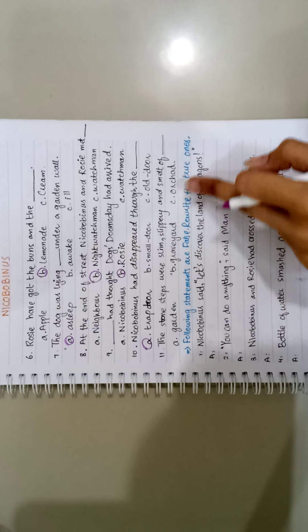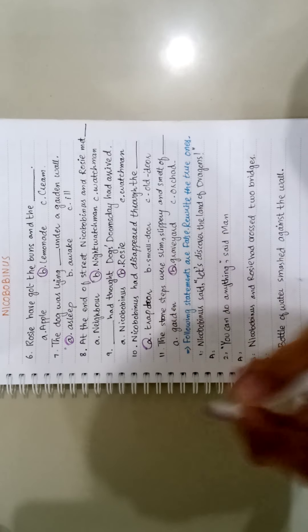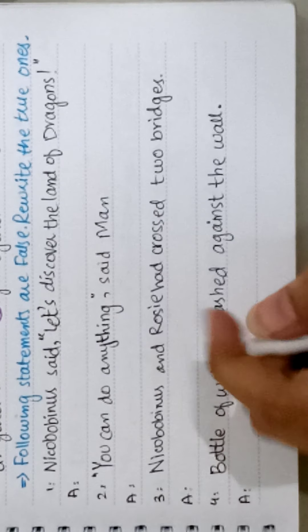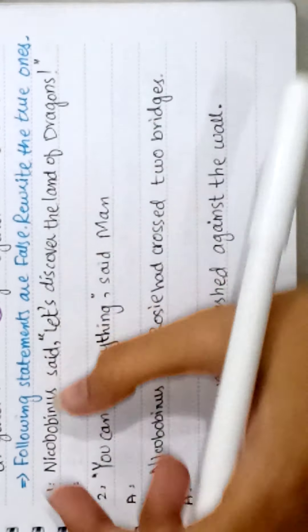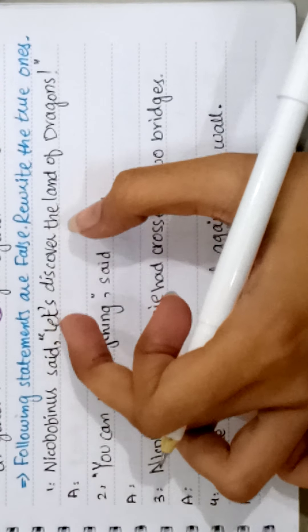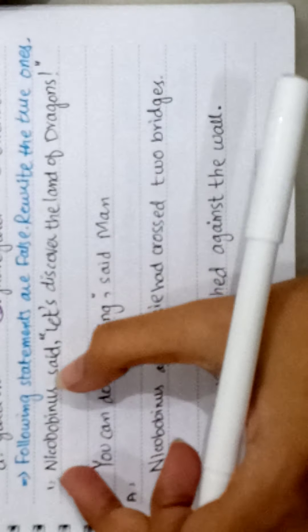Next, dash had thought dogs, doom days has arrived: Nicobobinus, Rosie, watchman. Rosie. Next, Nicobobinus had disappeared through the trap door, small door, old door. Trap door.